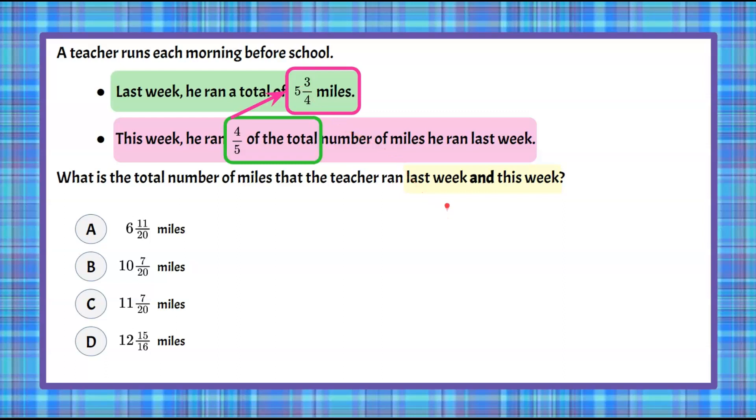So let's make a plan. Last week, we know that he ran 5 3/4 miles, and we're going to add to that this week, which we don't know, because it's 4/5 of this. So let's go do some math.